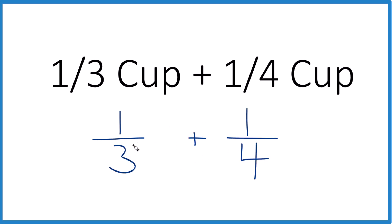When we're adding fractions here, we need to get the denominator, this number right here, to be the same. So we could multiply 3 times 4 and 4 times 3, like this. Because that would give us 12, that would be the same.